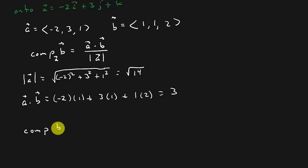So the scalar projection is going to be the dot product of A and B, which is 3, over the magnitude of A, which is the square root of 14. And there's your answer. And that's all it is. It's pretty simple. Just got to know how to find the dot product and the magnitude.